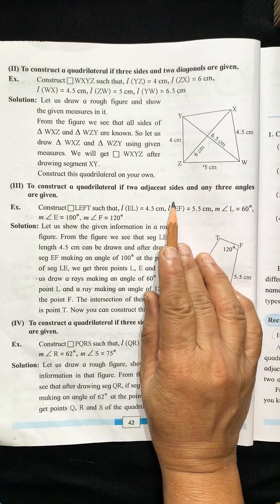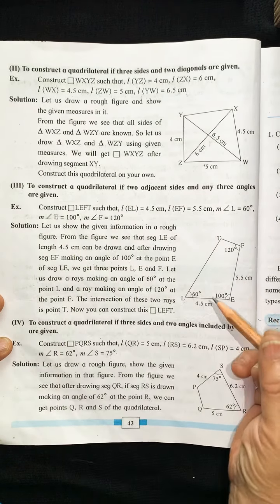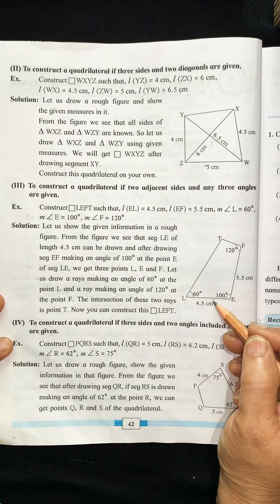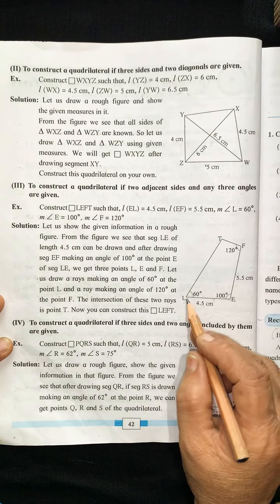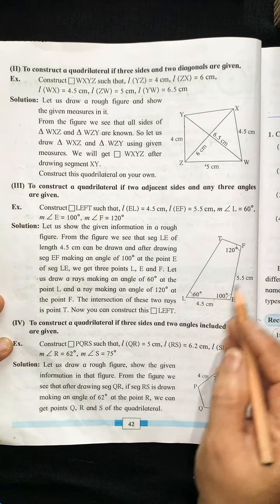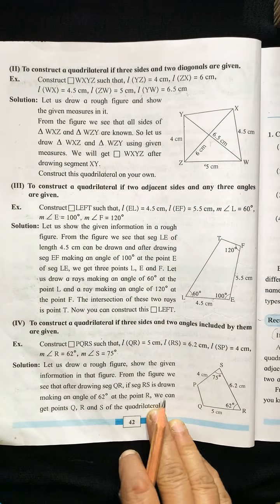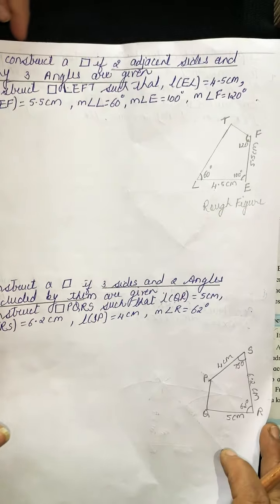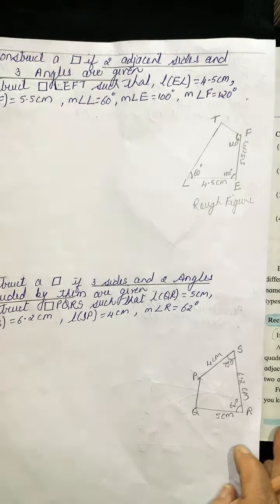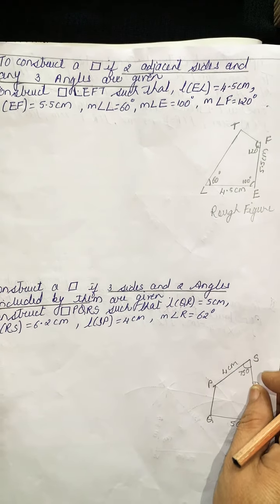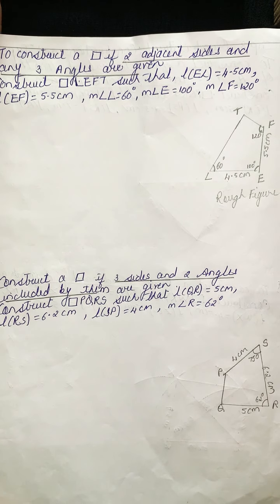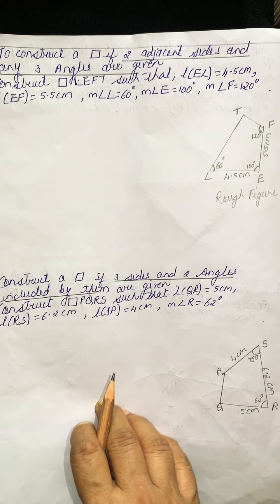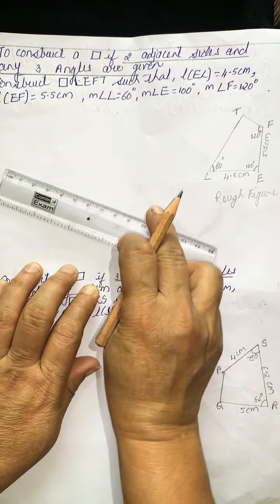Adjacent means next to each other — these 2 sides are next to each other and are called included sides. 3 angles are given. We draw the base, then accordingly draw these 2 angles, the sides, and draw this angle. In this third type, LE = 4.5 cm, EF = 5.5 cm, angle L = 60°, angle E = 100°, and angle F = 120°. First, let us draw LE as 4.5 cm.